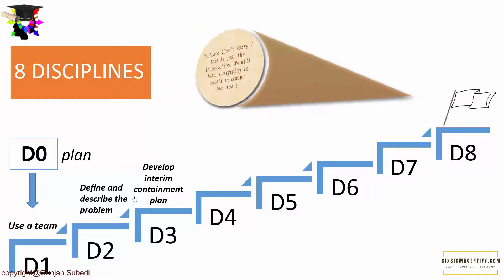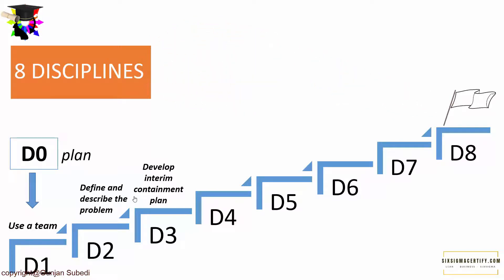In D3, we develop the interim containment plan. We define and implement containment actions that help isolate the problem from any customers, ensuring the problem doesn't reach them. Problems could be life-threatening or hamper the image of the product or company. In D4, we determine, identify, and verify the root causes and escape points. We try to identify all applicable causes that explain why the problem occurred, using tools such as 5 Whys, fishbones, and cause-and-effect matrix.